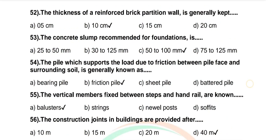Question 52: The thickness of a reinforced brick partition wall is generally kept — options: 5 cm, 10 cm, 15 cm, 20 cm. Correct answer: 10 cm. Question 53: The concrete slump recommended for foundations is — options: 25–50 mm, 30–125 mm, 50–100 mm, 75–125 mm. Correct answer: 50–100 mm.